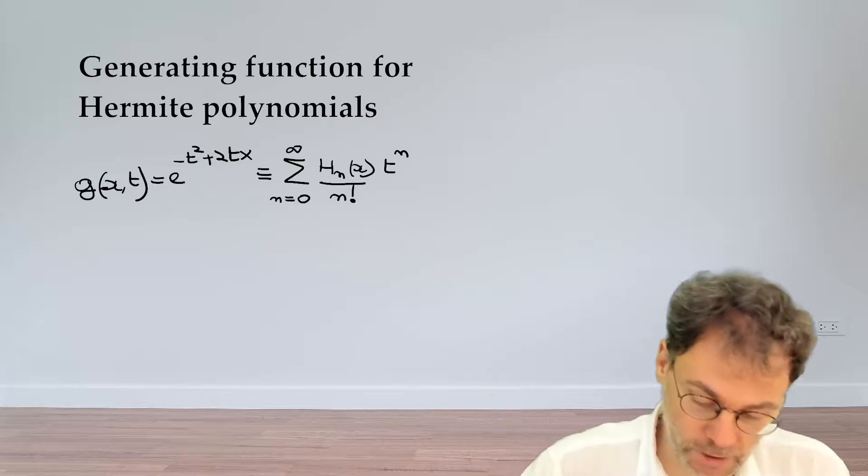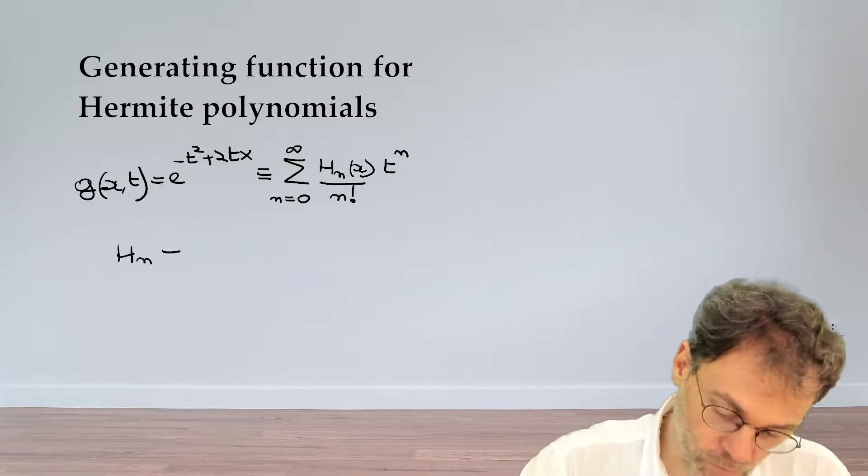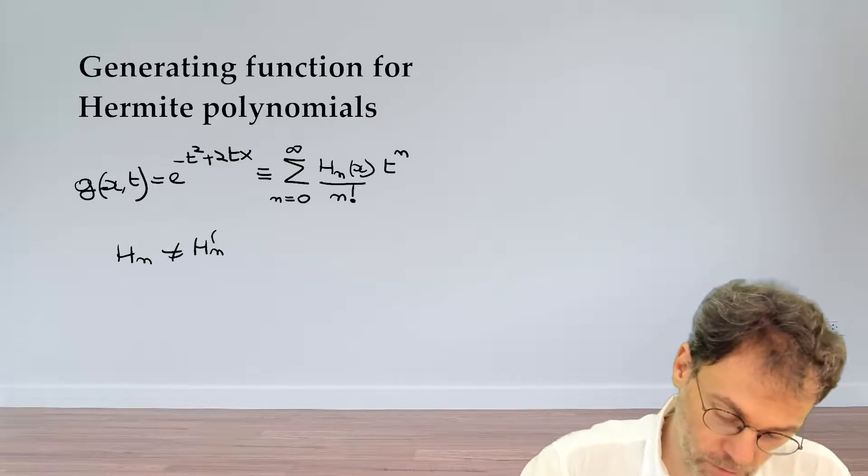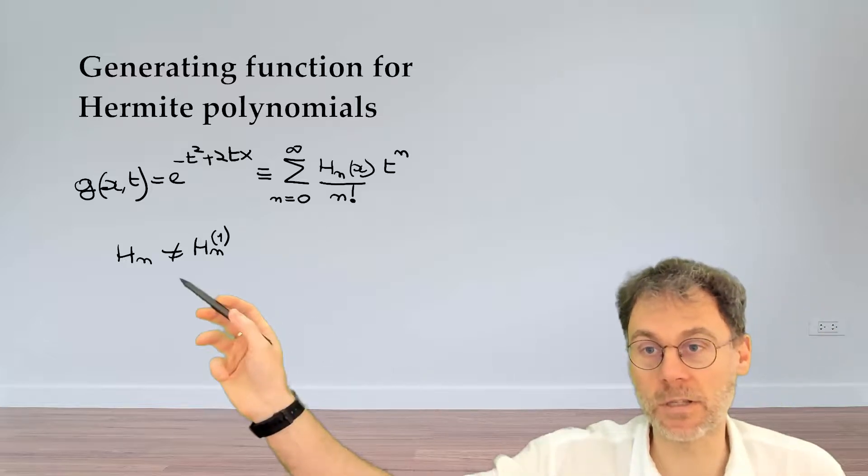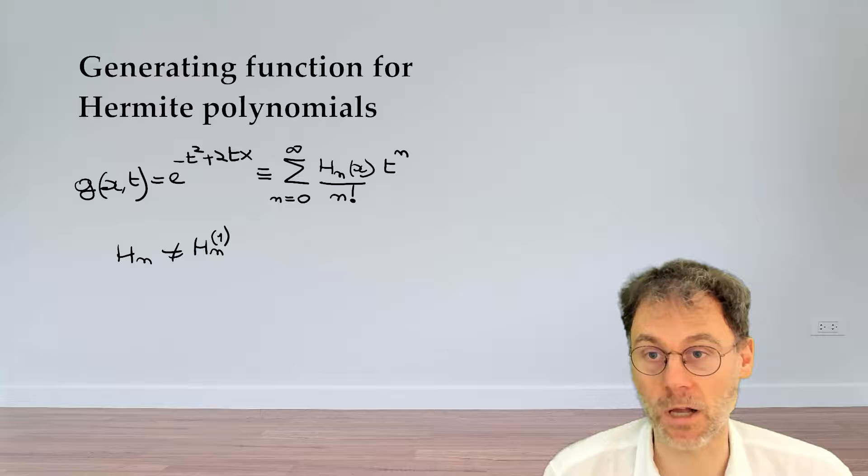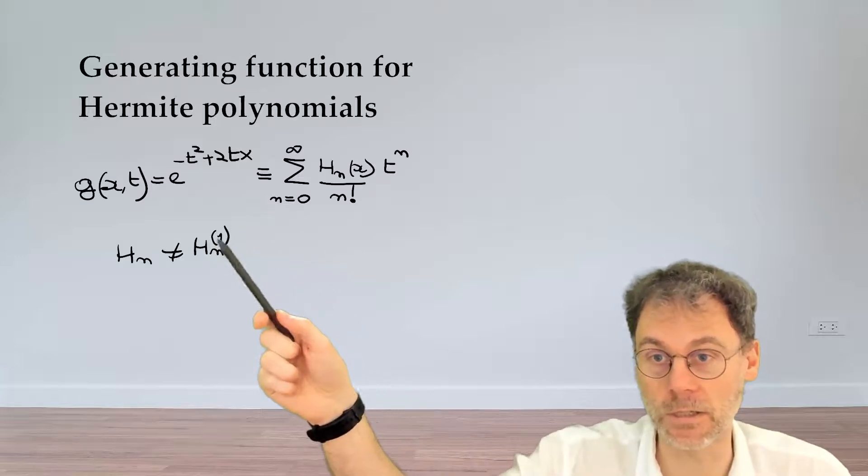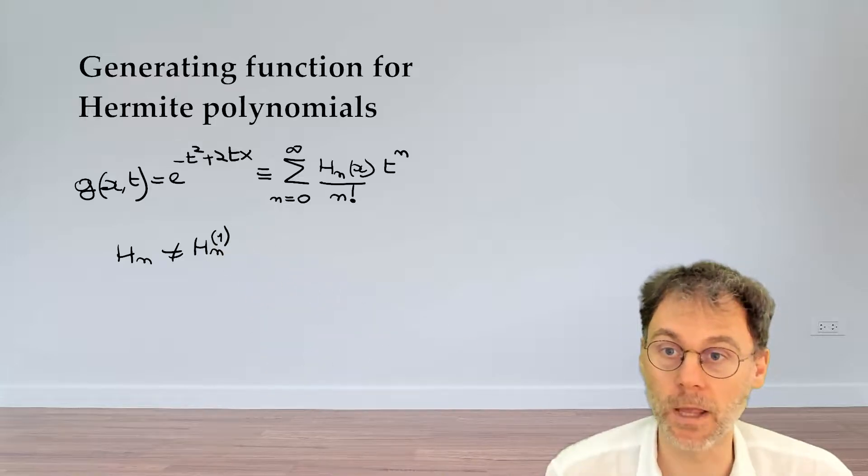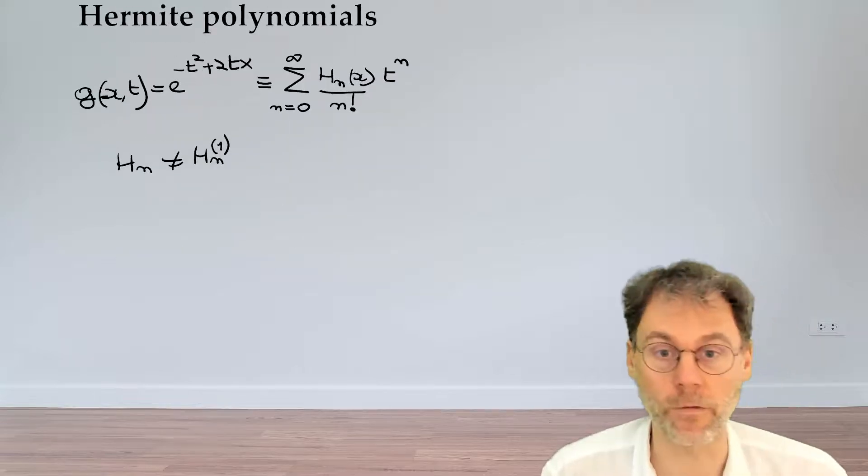By the way, don't confuse H_n with H_n^(1). The thing on the left is Hermite polynomial. The thing on the right is a Hankel function of the first kind, the difference, of course, is this superscript here. That's just a notational thing to be aware of.